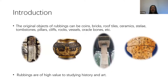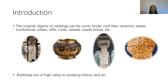The original objects of rubbings can be anything with a hard surface used to record texts, images, or drawings, including coins, bricks, roof tiles, ceramics, stelae, tombstones, pillars, cliffs, rocks, vessels, oracle bones, and more. Rubbings are of high value to studying history and art. Inscriptions commonly include canonical texts, institutions and regulations, military campaigns, eulogies, personal life stories, local events, temple construction, and mythologies. Drawings and designs commonly include costumes, military effigies, architectures, armories, religious figures, and auspicious symbols like dragons, flowers, and clouds.